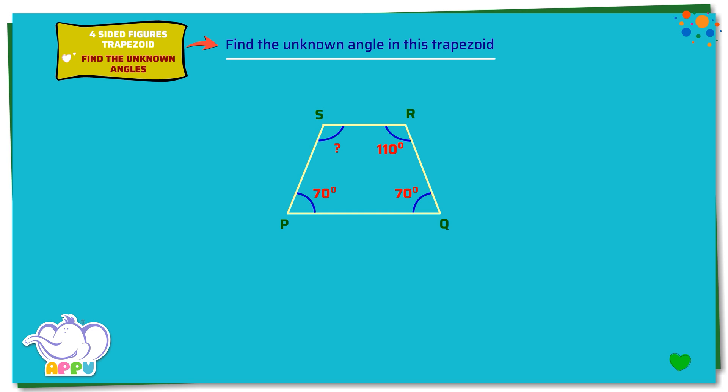PQRS is a trapezoid in which angle SPQ equals 70 degrees, PQR equals 70 degrees, and angle QRS equals 110 degrees. We need to find the angle RSP.